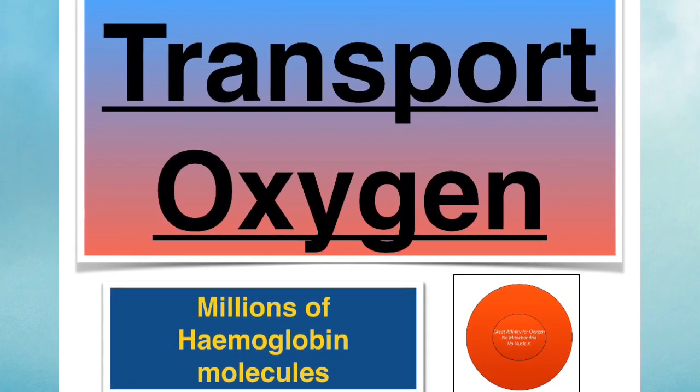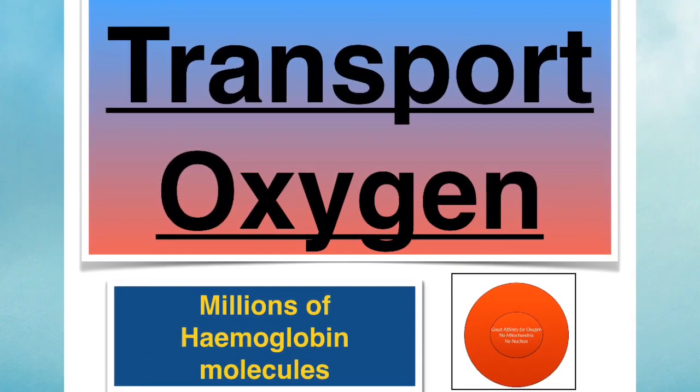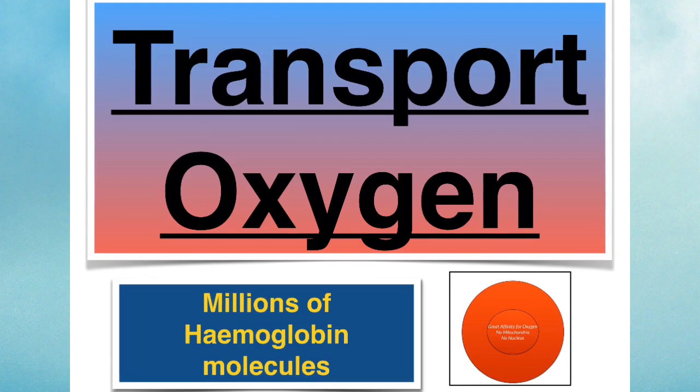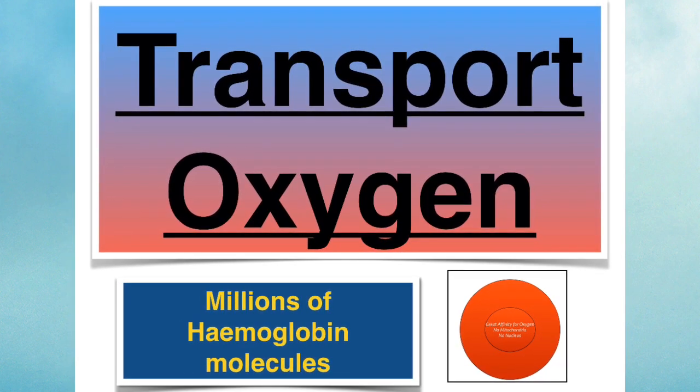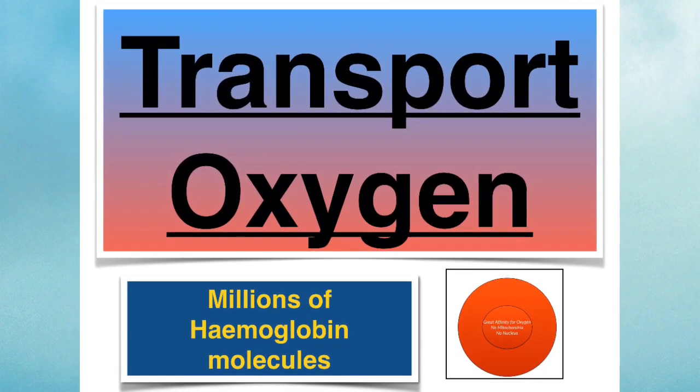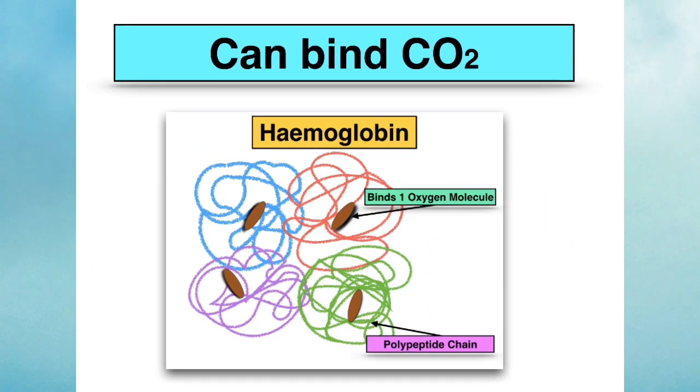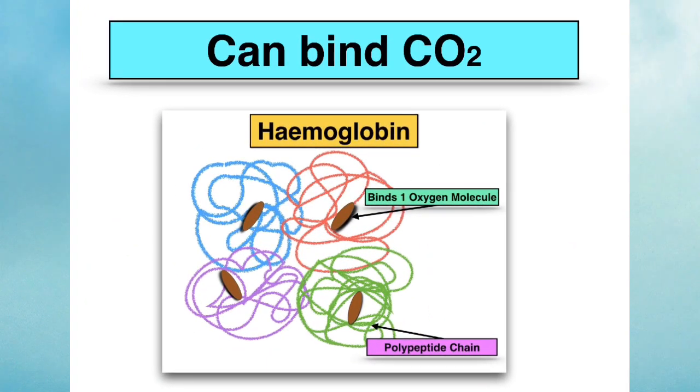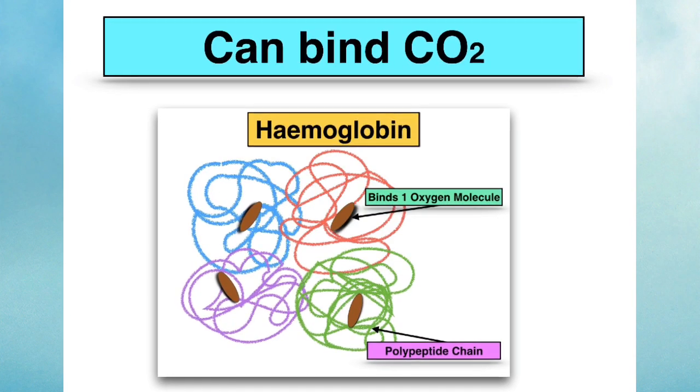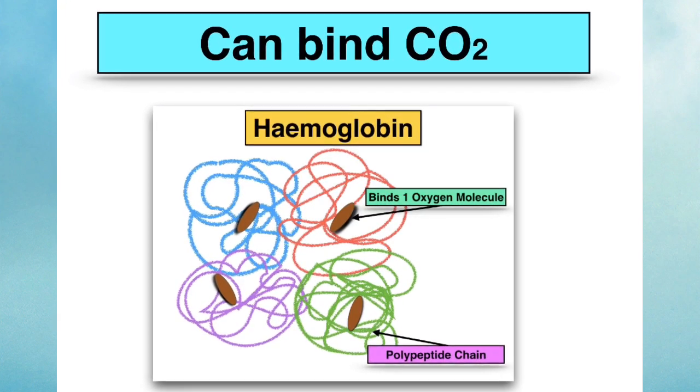The role of red blood cells or erythrocytes is to transport gases, particularly to transport oxygen, and this is helped greatly by the fact that red blood cells all contain millions of haemoglobin molecules. It's useful to know that haemoglobin can also bind carbon dioxide, and so red blood cells do play a role in transporting carbon dioxide as well.